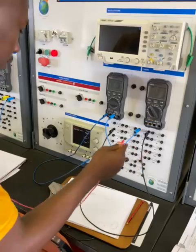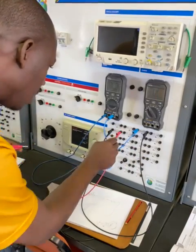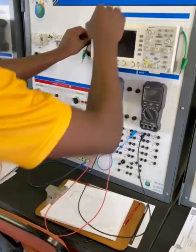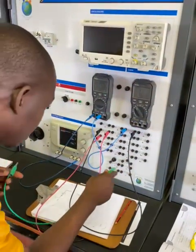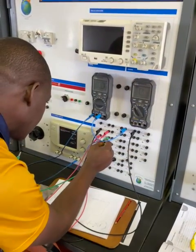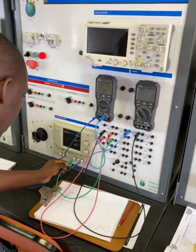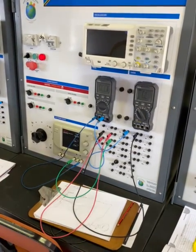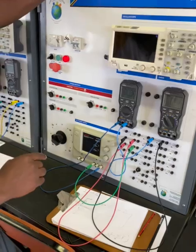Then we can complete the circuit by taking the negative of R3 to the negative of the supply. So what we have just done here is we have placed our multimeter in series with our circuit.